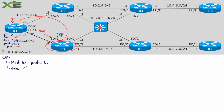One thing ORF does not support is multicast. It does not support multicast addresses or prefixes for filtering. I would not be able to go in and say filter out 224.x.x.x — it doesn't support that. It has to be regular IP packets.